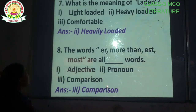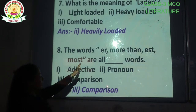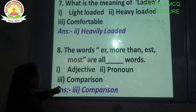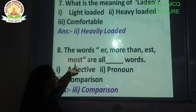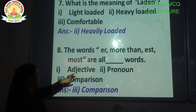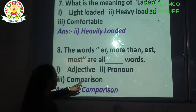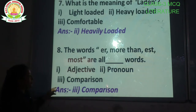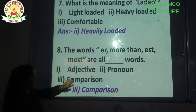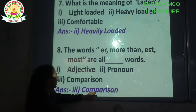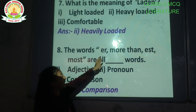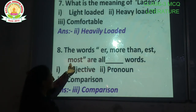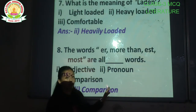Question number 8: The words 'er', 'more than', 'est', 'most' are all dash words. Options are: adjective, pronoun, comparison. The correct answer is option number 3 — comparison. The words 'er', 'more than', 'est', 'most' are all comparison words.